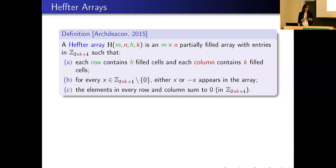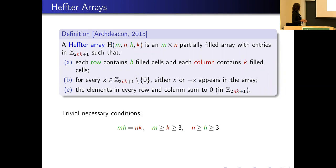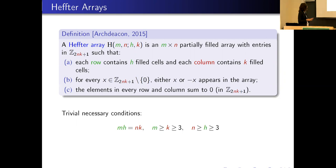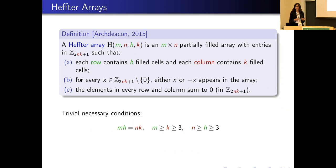The last condition requires that every row and every column sums to zero modulo 2nk plus one. From the definition we immediately have necessary conditions about the filled cells: if we look at the rows the array has mh filled cells, and if we look at the columns it has nk filled cells, so clearly mh equals nk must be satisfied. By conditions b and c, every row and every column has at least three filled cells.